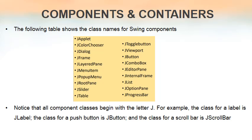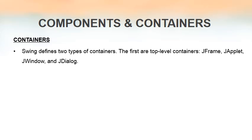This table shows the names of Swing components. All these are classes, and as you can see, all class names begin with the capital letter J — JApplet, JFrame, JButton, JViewport, JTextBox, etc. The key difference between AWT and Swing class names is that all Swing classes begin with a capital J.